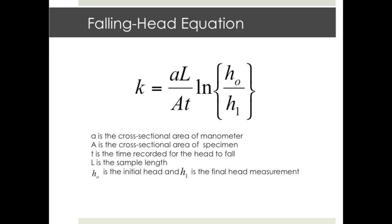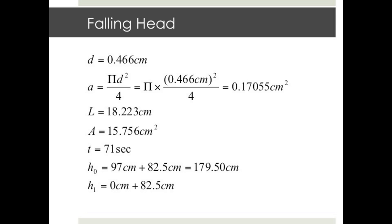We will now move on to the theory of the falling head test. The coefficient of permeability in this case is calculated by an empirical relationship: K equals (aL) over (A times T) times the natural log of H0 over H1. Little a is defined as the cross-sectional area of the manometer — this is why we need to look up the inner diameter of the manometer in the owner's manual or find it by calibration. Little a times L yields the total volume introduced into the sample over a time interval T. H0 was the hydraulic head before the base nozzle is opened at time T equals 0, and H1 is the hydraulic head at the end of the test. The hydraulic head falls from H0 to H1 over a time interval T. The inner diameter of our manometer was found to be 0.466 centimeters.